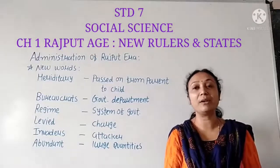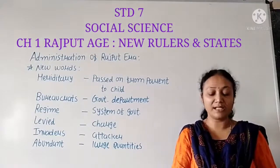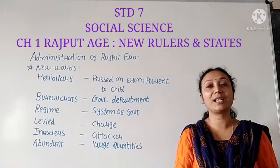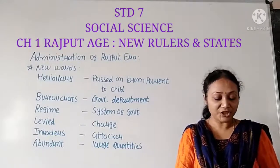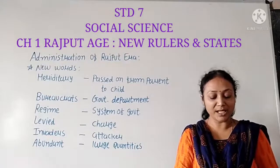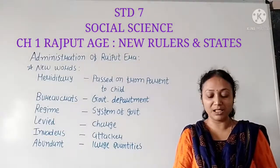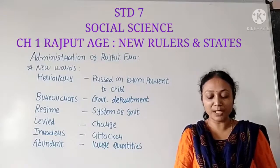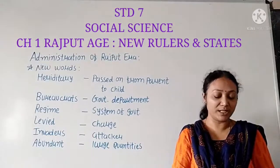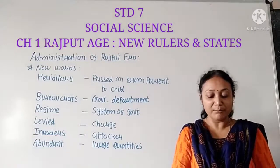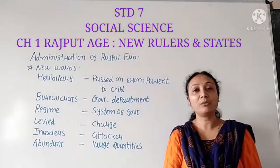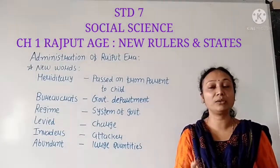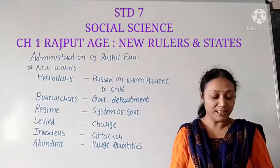In the village, the head was known as Mukhiya or Sarpanch. All the Gram Panchayat members used to give judgment in many matters. Yet the king was the supreme authority in the legal system of the state — the king had the final authority to take all decisions.